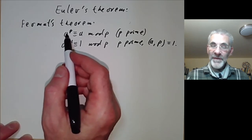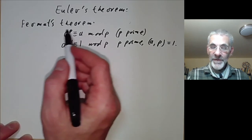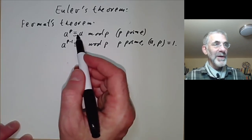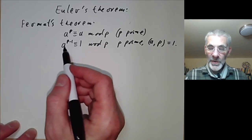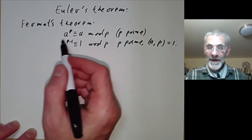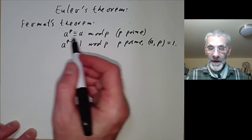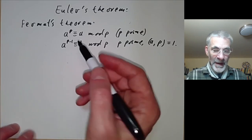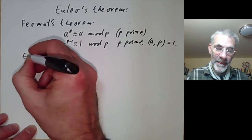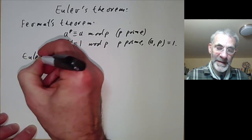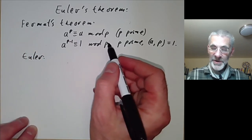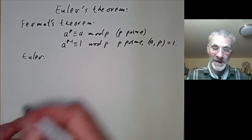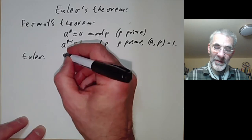Euler and probably Fermat proved the first form by using the binomial theorem as we saw earlier. What Euler did was find a second proof that's more convenient for the second form. Euler also noticed that his proof gave a generalisation to when you can replace p by something that isn't prime.